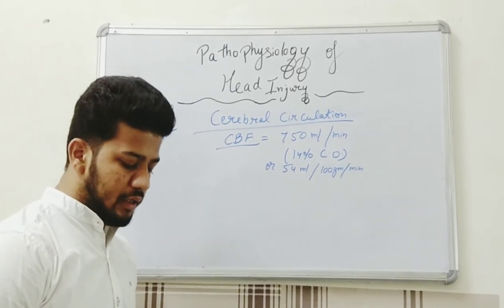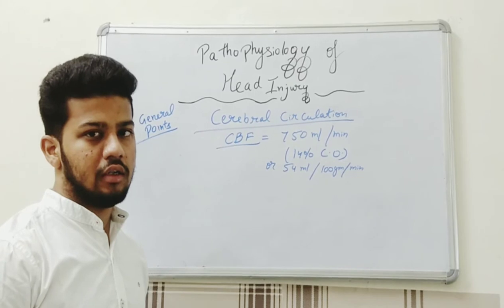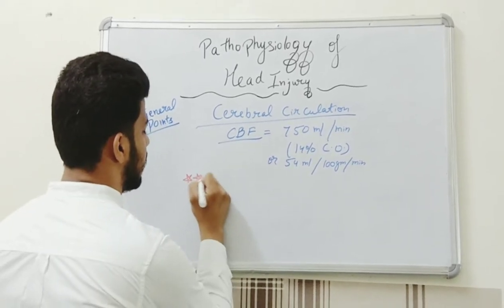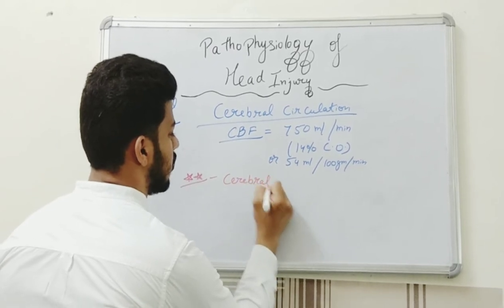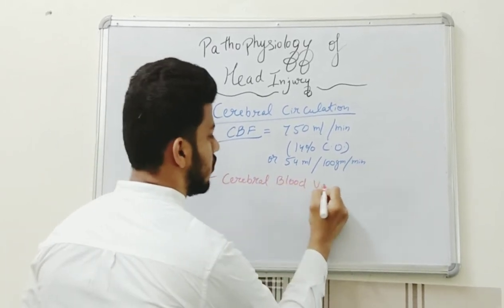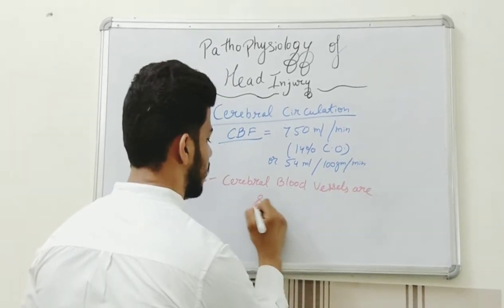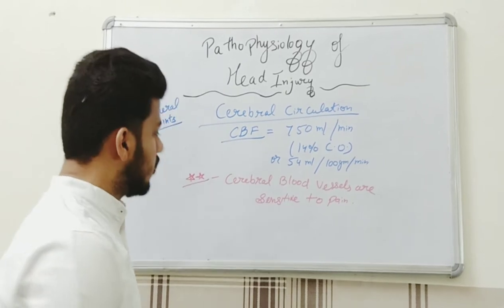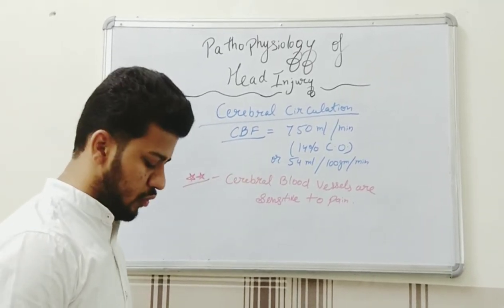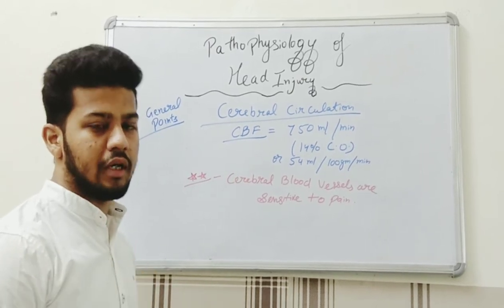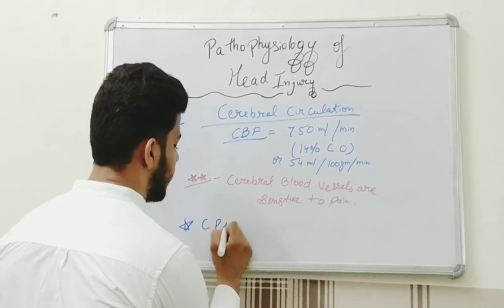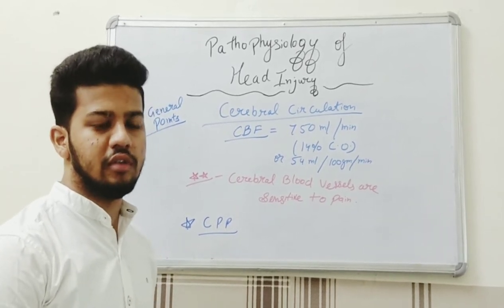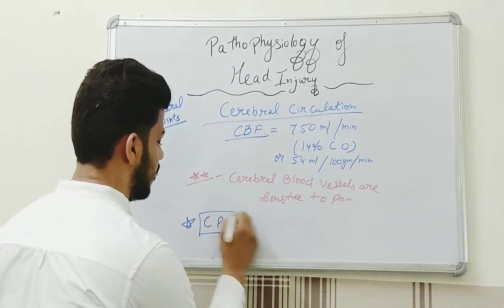An important point to note is that cerebral blood vessels are sensitive to pain. The condition seen in migraine is because of this property of cerebral blood vessels. The brain is also sensitive to hypoxia, so we cannot compromise blood circulation towards the brain. The cerebral perfusion pressure tells us about blood flow to the brain and helps assess prognosis in head injury.